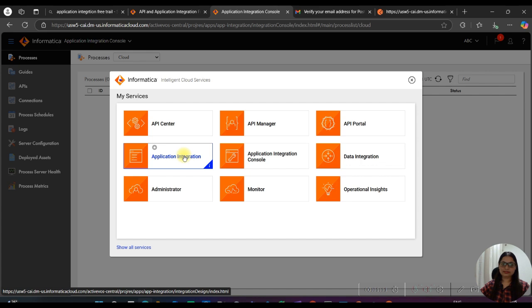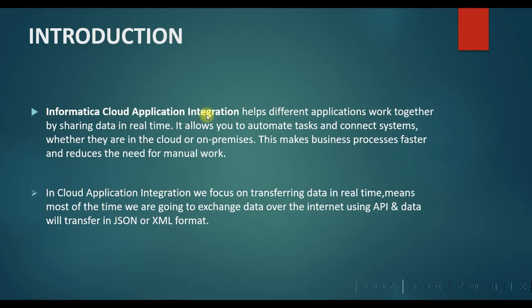Informatica Cloud Application Integration helps different applications work together by sharing data in real time. It allows you to automate tasks and connect systems whether they are cloud or on-premises, making business processes faster and reducing the need for manual work. Basically, the application integration service allows us to perform real-time, web service-based integration of processes, applications, and systems.